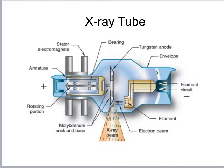The negatively charged side of the x-ray tube is the filament circuit, which provides electrons. Electrons are liberated from atoms through thermionic emission: the thoriated tungsten filament is heated up, which boils off electrons, producing an electron cloud on the negative side of the tube.